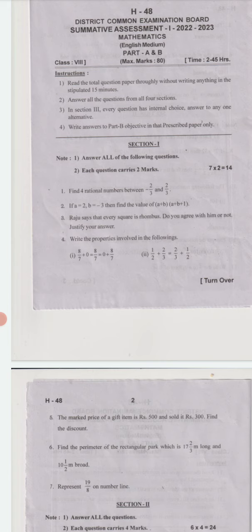We need to answer all the following questions. Each question carries two marks. First question: find four rational numbers between -2/3 and 2/3. Second question: if a equals 2 and b equals -3, then find the value of (a+b) into (a+b+1).